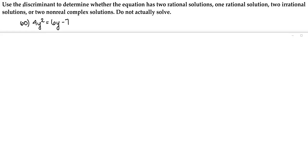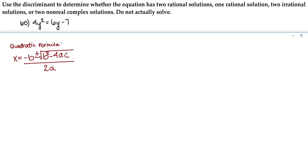Let's talk about what the discriminant is. The discriminant is what's under the radical inside of the quadratic formula: x equals the opposite of b plus or minus the square root of b squared minus 4ac, all over 2a. So it's b squared minus 4ac — that's what we call the discriminant. The discriminant will tell us what type of solutions we're going to get.